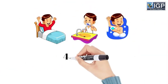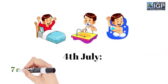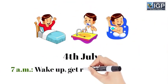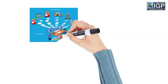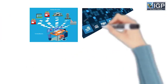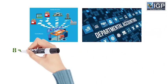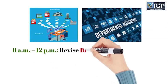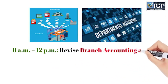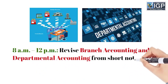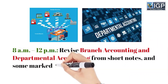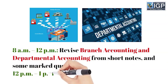On 4th July, get up at 7 a.m., get ready and have breakfast. From 8 a.m. to 12 p.m., revise branch accounting and departmental accounting from short notes and some marked questions.